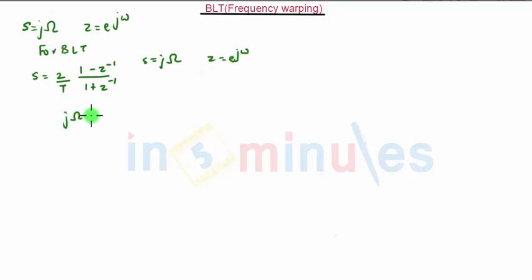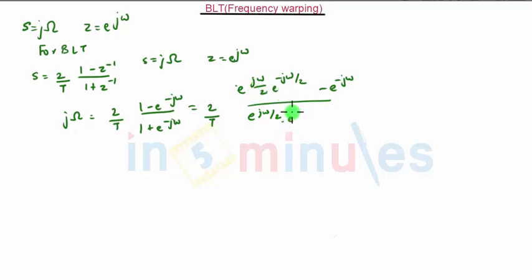So jΩ = (2/T)(1 - e^(-jω))/(1 + e^(-jω)). That is (2/T) times [e^(jω/2) · e^(-jω/2) - e^(-jω)] / [e^(jω/2) · e^(-jω/2) + e^(-jω)].